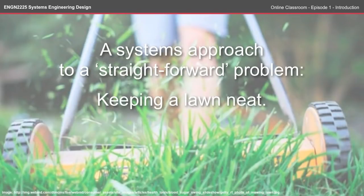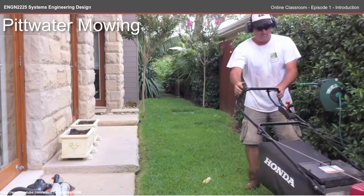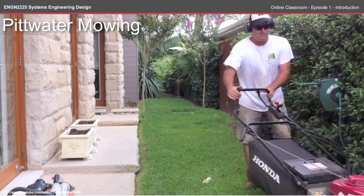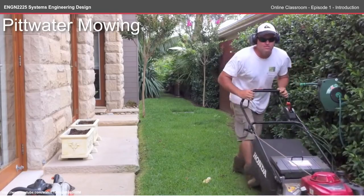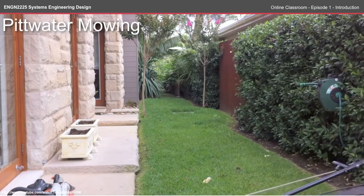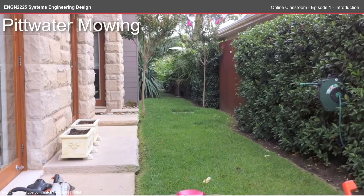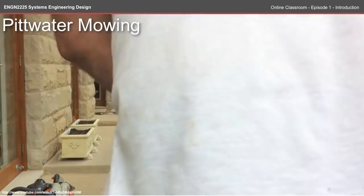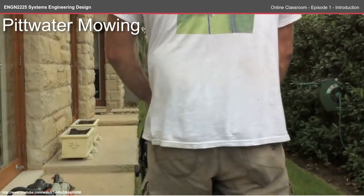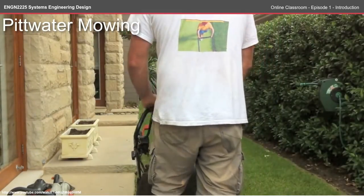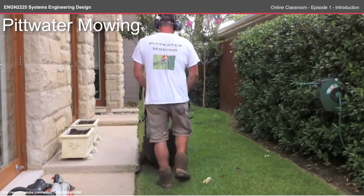During the course of this semester, I will go through the systems engineering process to solve a relatively straightforward problem: design a system to keep a lawn neat. Note that the problem doesn't guide me down a particular path — it's not 'design a better lawnmower.' The systems view challenges me to look for the most appropriate solution, whatever that might be.